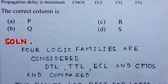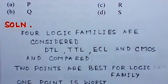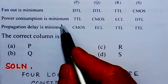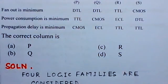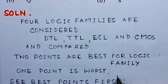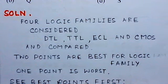Two points are the best for logic families and one point is the worst. Out of the three parameters, two are good points for a family and the third is a negative point. Minimum fan out is not a positive point for the family, but minimum power consumption is a very good positive point, and minimum propagation delay is also a positive point.